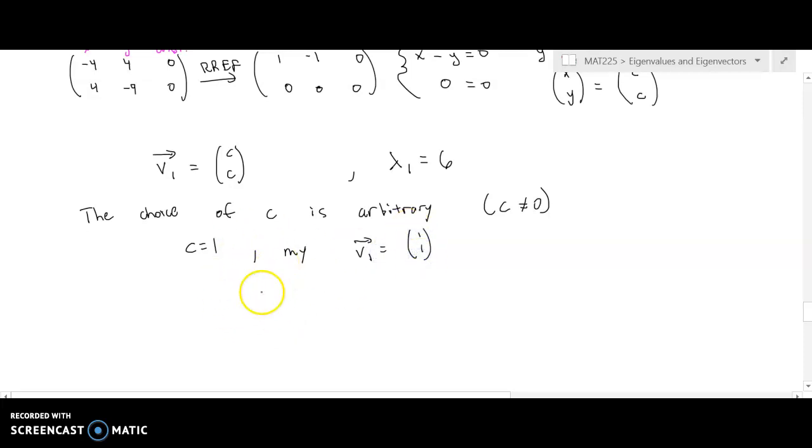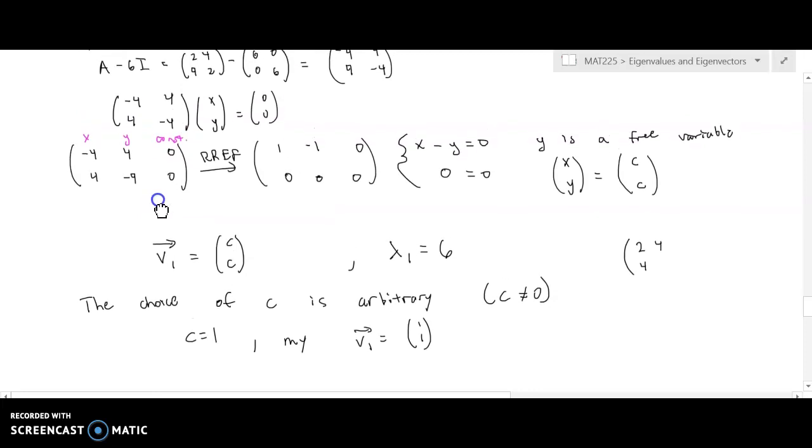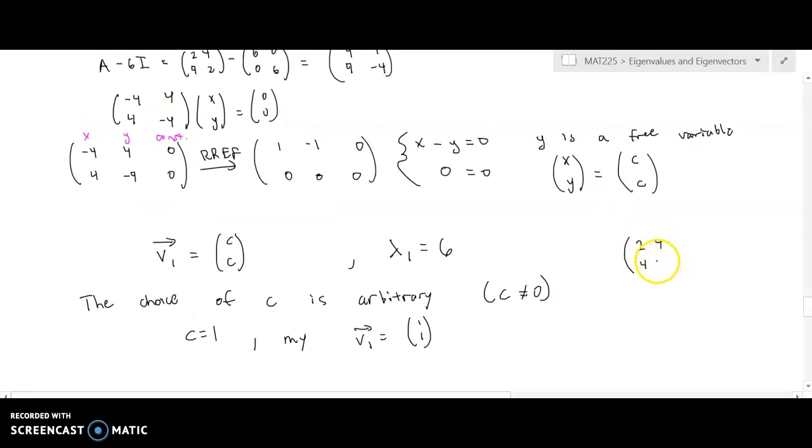But what we should be able to notably verify is that, in fact, any vector of the form [C, C]. If I take [[2, 4], [4, 2]], what was our matrix from earlier? It was [[2, 4], [4, 2]].